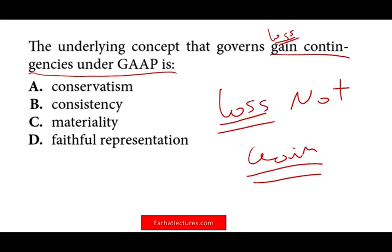In accounting, accountants are very conservative people. We use conservatism. We don't report gain contingencies — meaning we are expecting a gain — because we don't want to be too optimistic. Once the gain is guaranteed and in our pocket, then we report it. But if there's a good chance we are going to lose and we can estimate the amount, then we report a loss contingency. Both loss and gain contingencies follow the concept of conservatism.